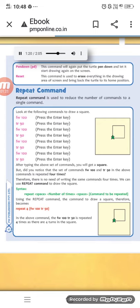Syntax: repeat space number of times space command to be repeated. Using the repeat command, the command to draw a square therefore becomes repeat 4 FW100 TR90. In the above command, the FW100 TR90 is repeated four times as there are four turns in the square.